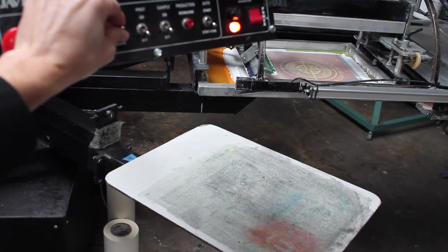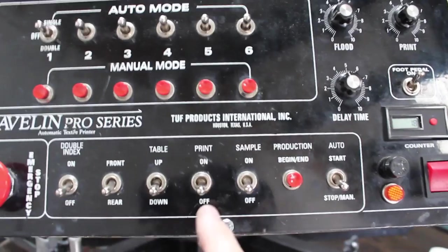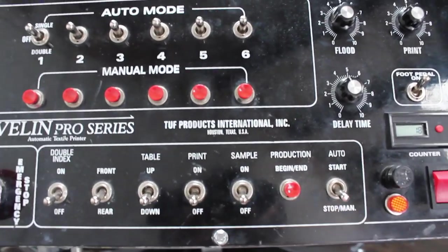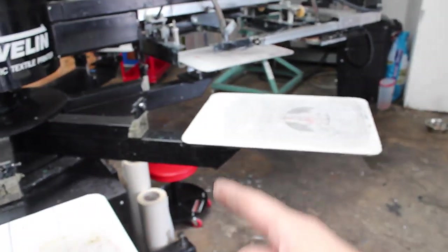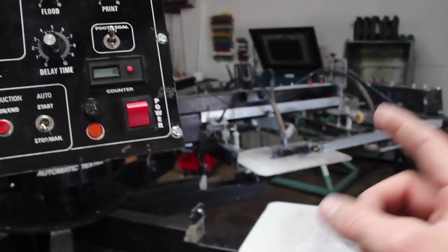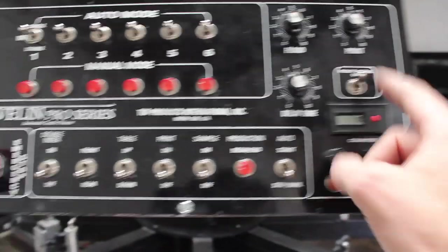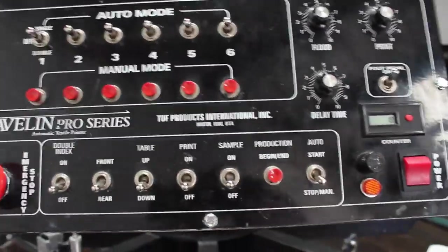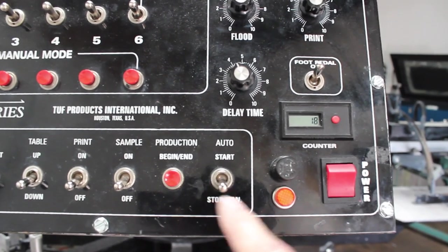Table up and table down will move the press up and down. Print On activates the print heads. Sample is basically starting the press up and making it go through its sequence, turning on and turning off each of the heads, making it go all the way completely around the press to produce a sample.